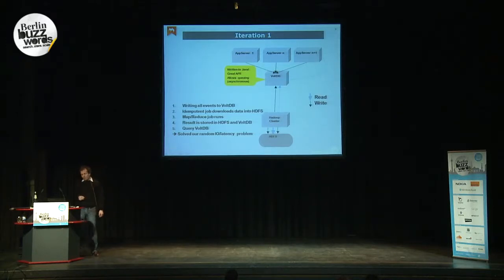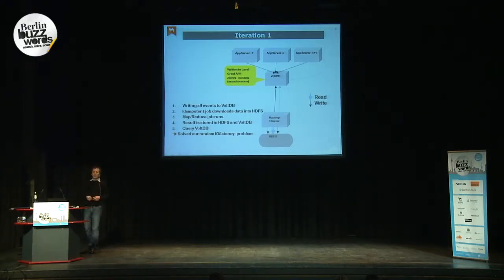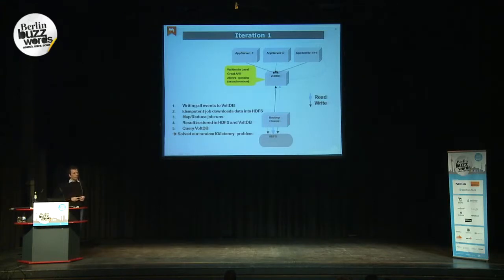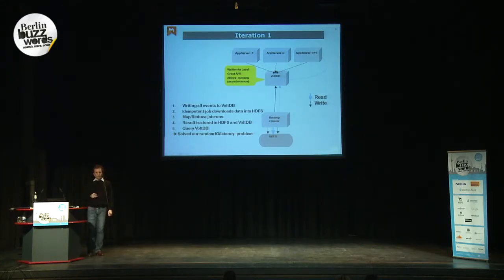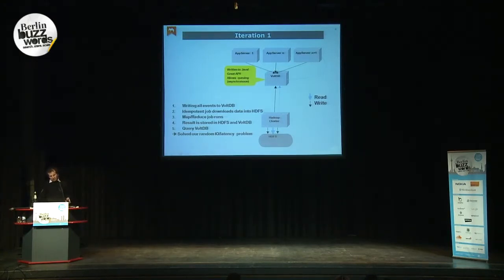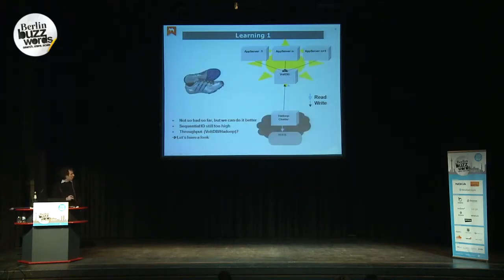We slightly modified our procedure. Right now all events are written into VoltDB. An idempotent job in the Hadoop cluster gets all the data from VoltDB, imports it into HDFS, and runs the MapReduce job. After that, results are stored in both HDFS and VoltDB, so it's possible to query VoltDB for future queries and get new facts recalculated every five minutes or every 100,000 events — whichever comes first. It's just a configuration. We solved our random IO and latency problem, but we did not yet solve our sequential IO problem.